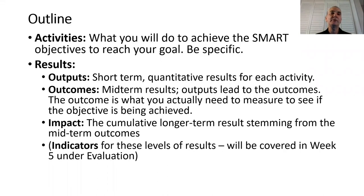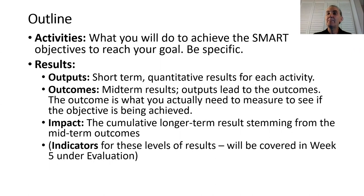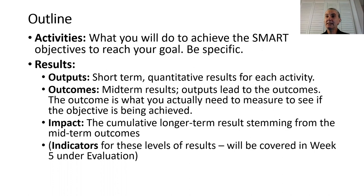The outline will cover activities — what will you do to achieve the SMART objectives to reach your goal? Your SMART objectives being specific, measurable, achievable, realistic, and time-bound. Your activities need to be specific, and these activities will lead to three levels of results.